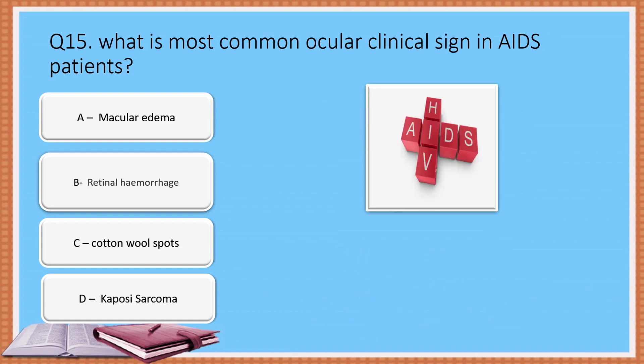Question 15: What is the most common ocular clinical sign in AIDS patients? Option A: Macular edema. Option B: Retinal hemorrhage. Option C: Cotton wool spots. Option D: Kaposi sarcoma. The correct answer is Option C: Cotton wool spots.